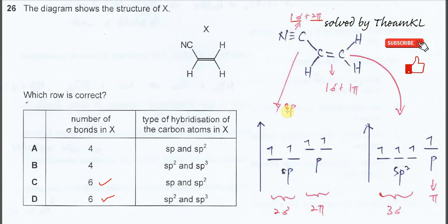Now let's get the hybridization of carbon in X. Starting with the C=C double bond — the carbons here form three sigma bonds and one pi bond. Looking at this carbon, it forms three sigma bonds and one pi bond. To form three sigma bonds, we need three unpaired electrons in the hybrid orbitals, which tells us it must be sp2 hybridization.